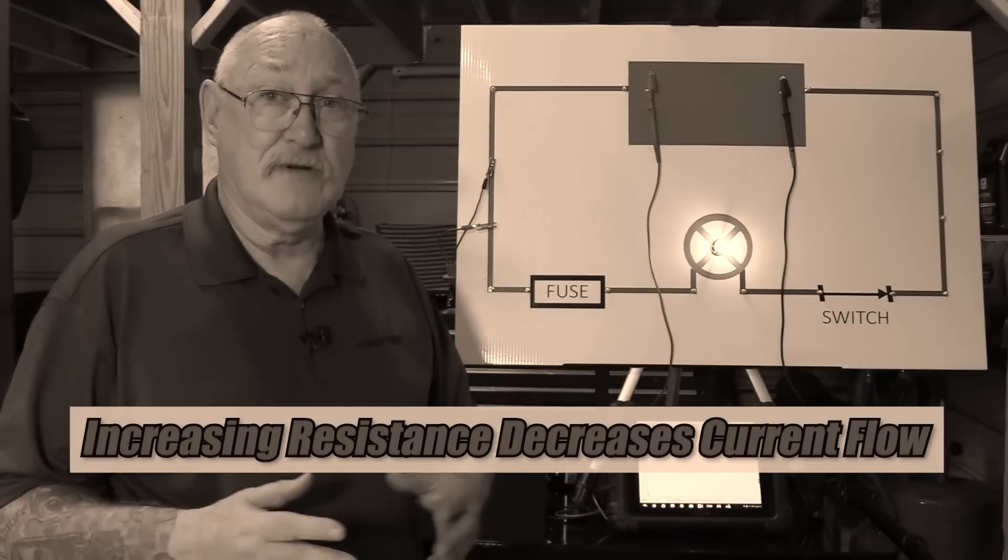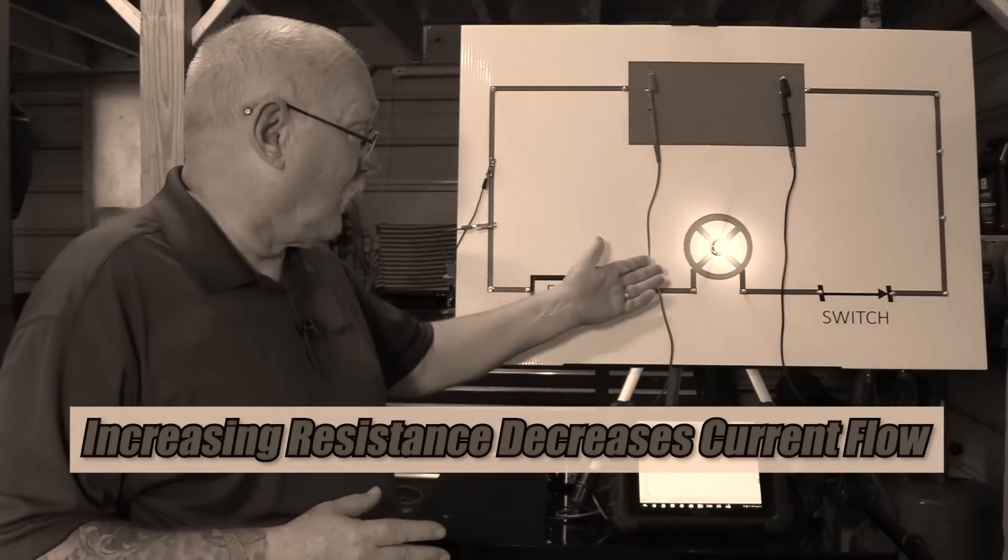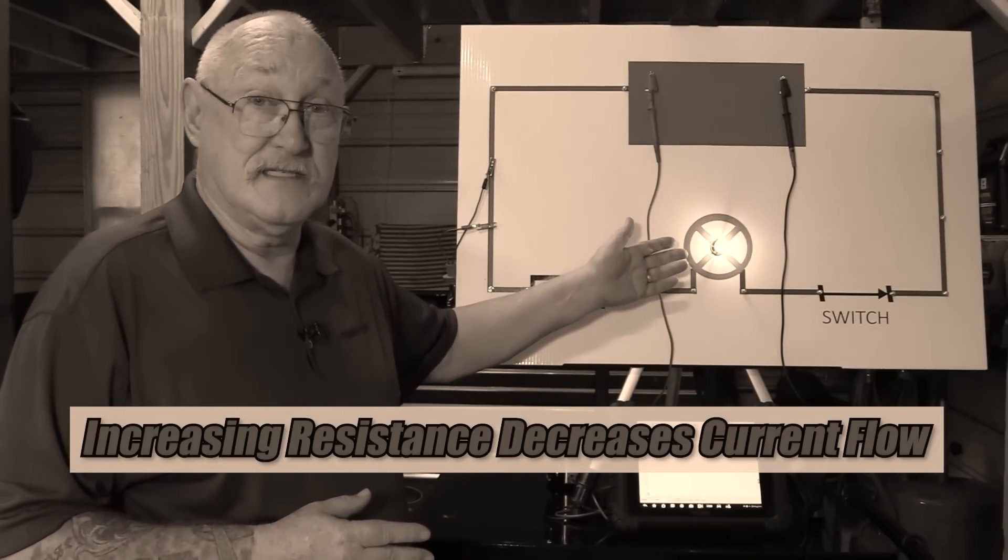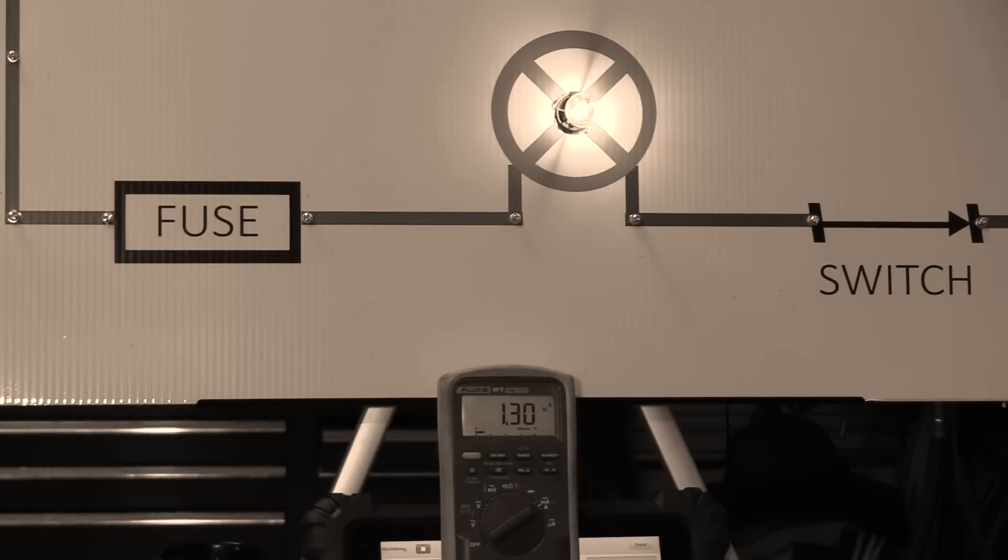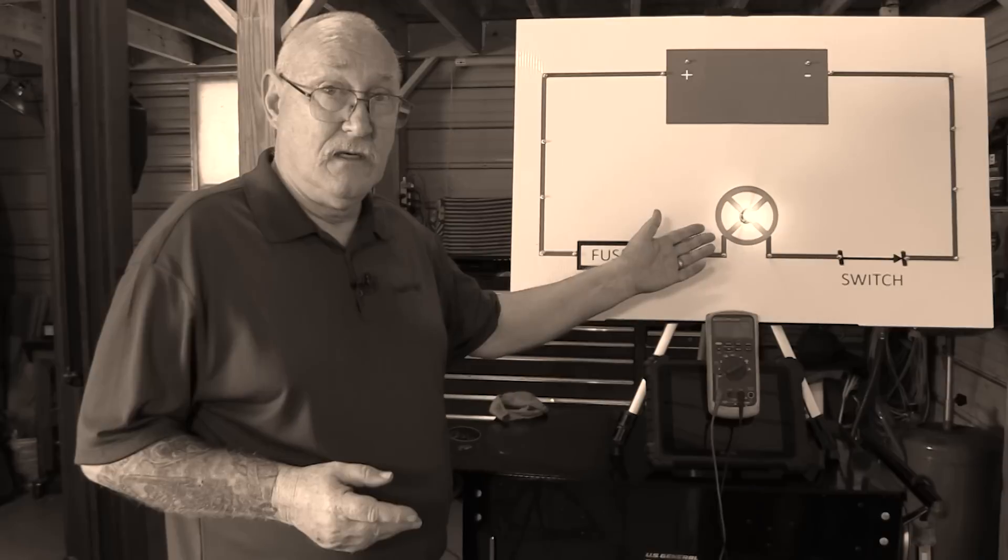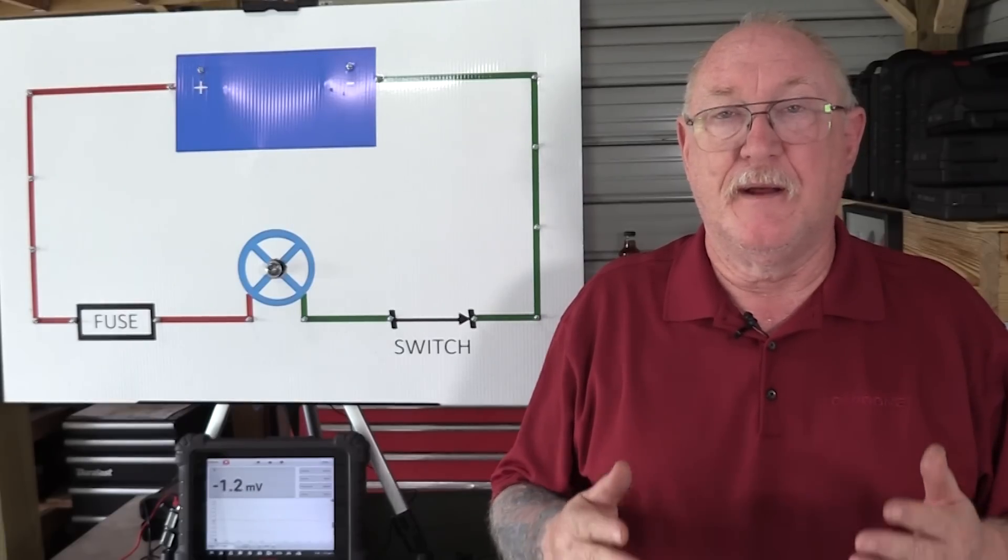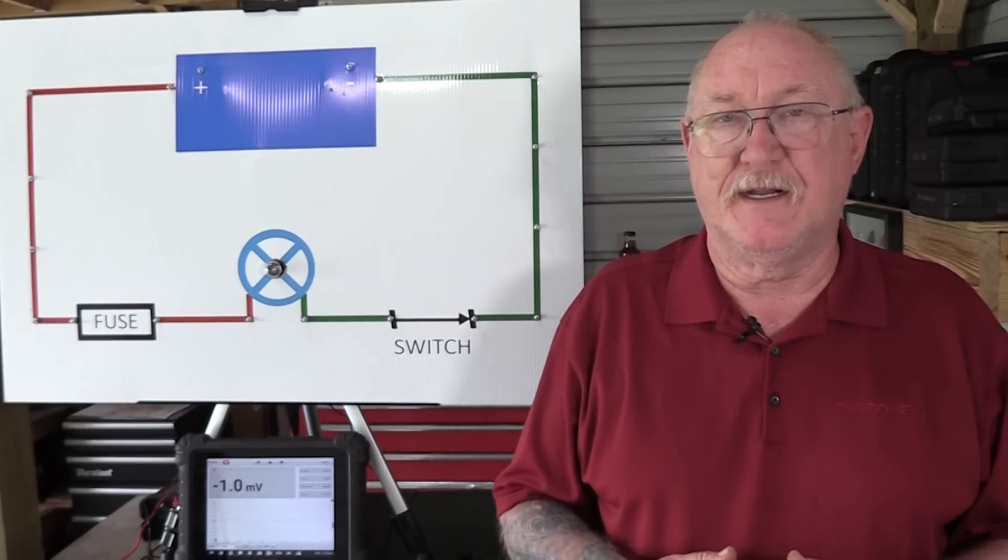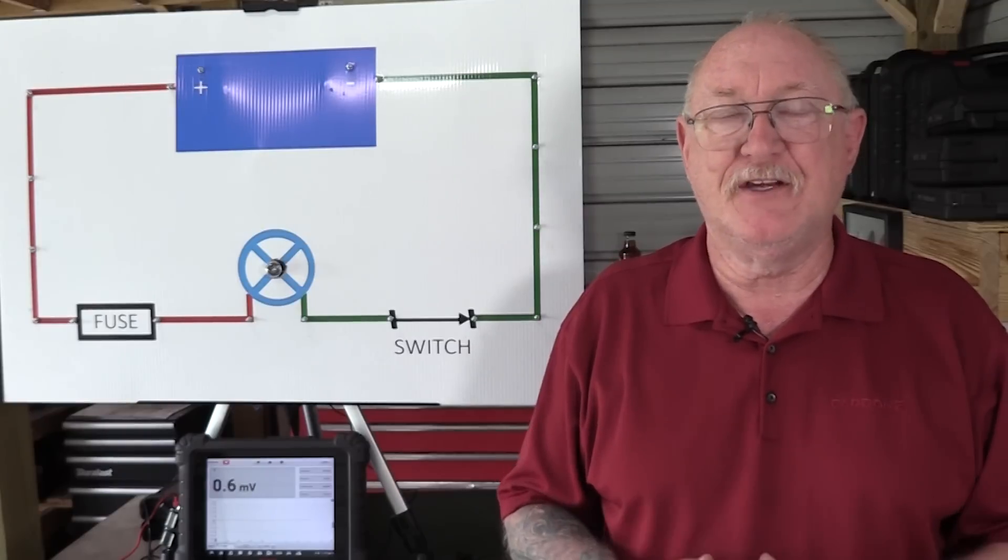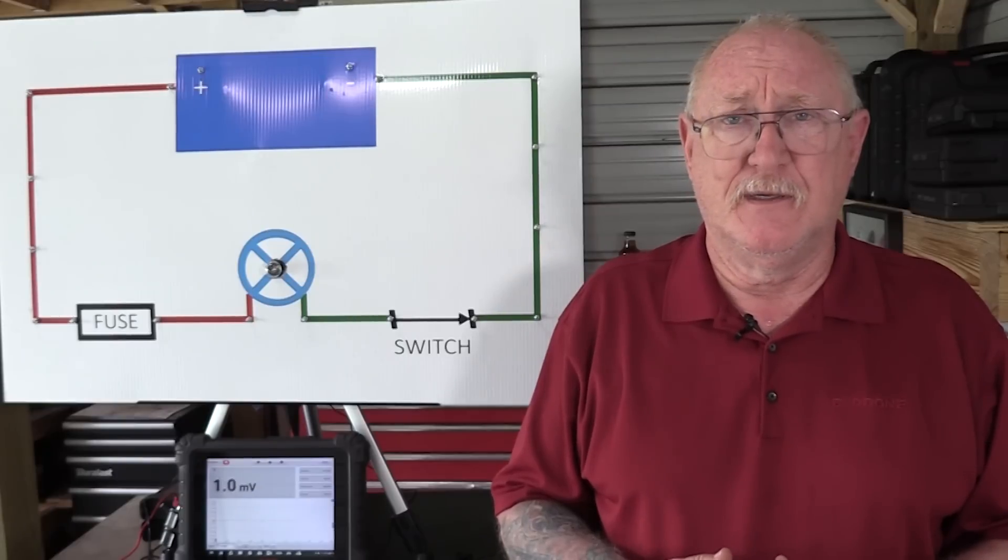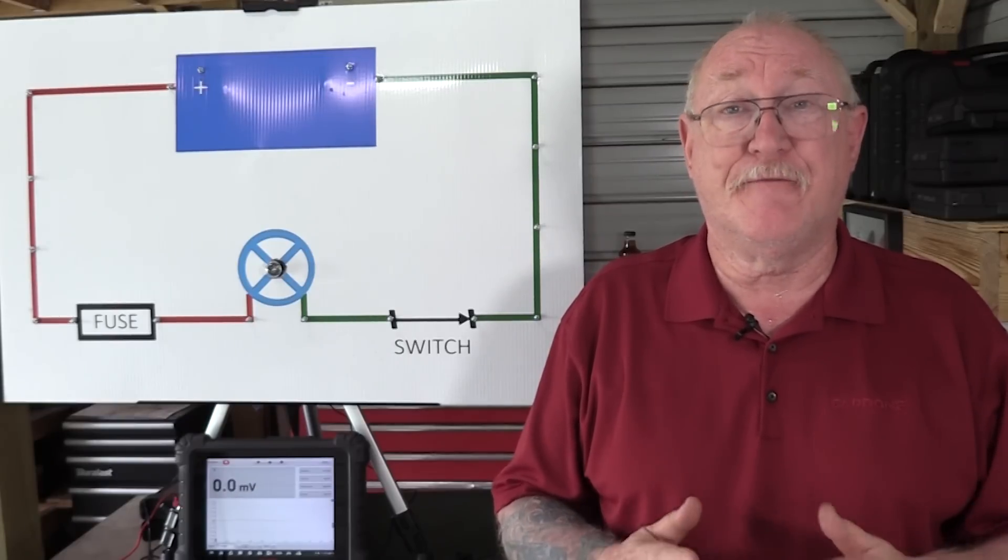Last time on ProTech, I showed you how voltage, resistance, and current interact. We learned that when resistance in the circuit increases, current in the circuit decreases. And the component operated by the circuit won't function as it should, if it functions at all. I also shared that many of the faults you're trying to diagnose are caused by these changes in resistance. Today, I'm going to show you how to find those faults.